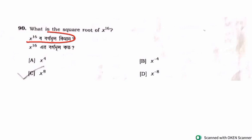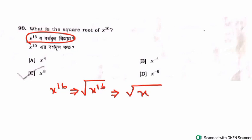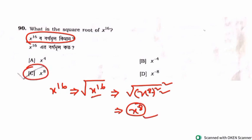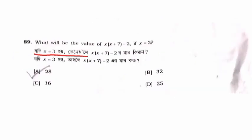x to the power 16 — what is the square root? Taking the square root of x to the power 16, we write it as the square root of x to the power 16, which equals x to the power 8. So the under root of x to the power 16 equals x to the power 8.